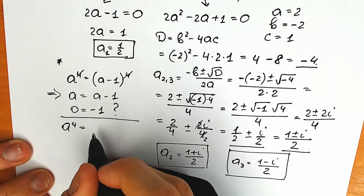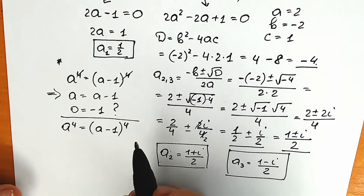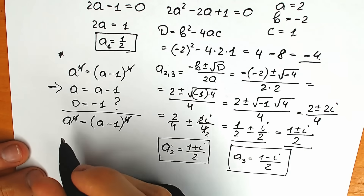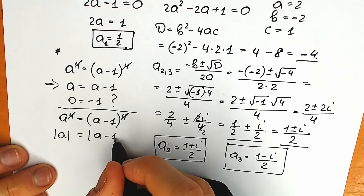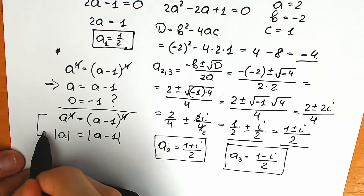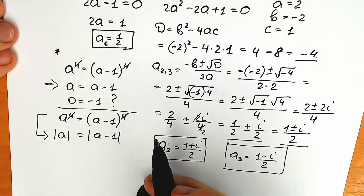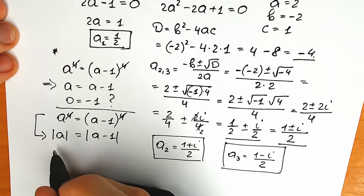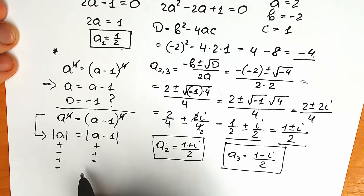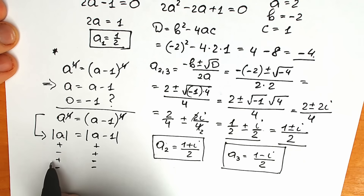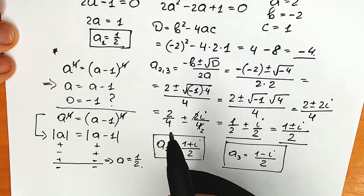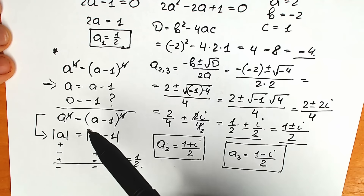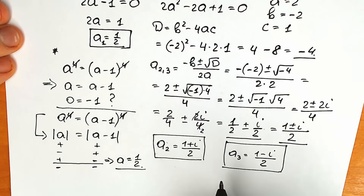With absolute values on both sides, you can solve by considering all sign combinations — positive/positive, positive/negative, negative/positive, and both negative. In the case where one is positive and one is negative, you find a equals one half. So you can cancel the fourth power if you don't forget the absolute value, and you will find a = 1/2.